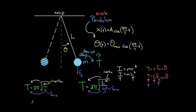One more thing: amplitude does not affect the period of a mass on a spring, and similarly, the amplitude — theta maximum — does not affect the period of a pendulum, as long as your amplitudes are small and you're in the simple harmonic oscillator regime.